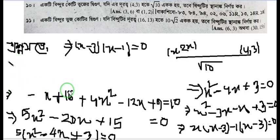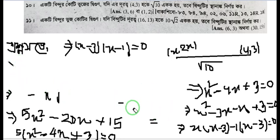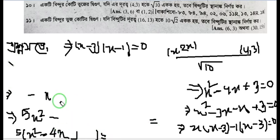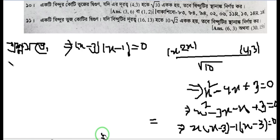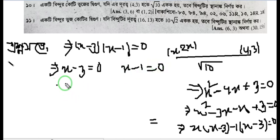So either x minus 3 equals 0, which means x equals 3, or x minus 1 equals 0, which means x equals 1.